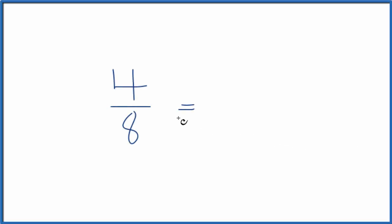If you're asked to find equivalent fractions for 4 8ths, here's how you do it. Basically, what we're trying to do is find another fraction that has the same value but a different numerator and denominator.